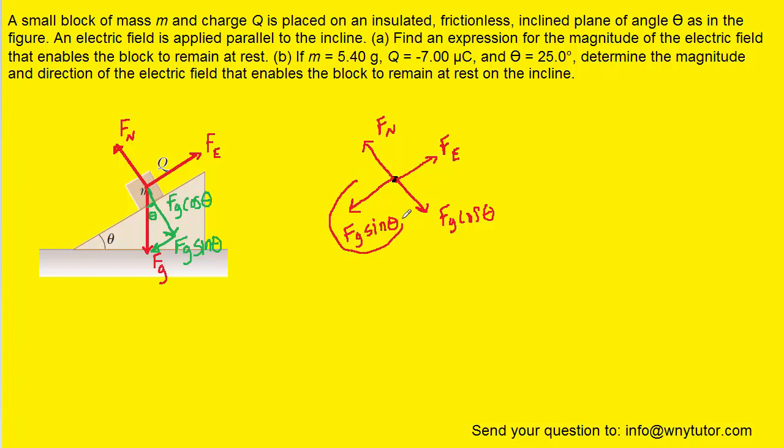These two forces, the Fg sine theta and the electrical force, are both acting in the x direction. The sum of the forces in the x direction equals zero since the block is not accelerating. We take the electrical force pointing in the positive x direction and subtract the gravitational force acting in the x direction, setting that equal to zero. Notice we're subtracting that gravitational force because it's pointing in the negative x direction.